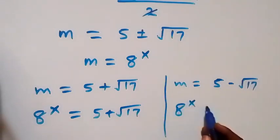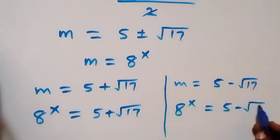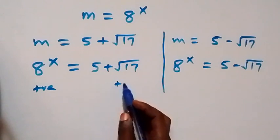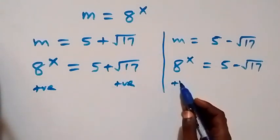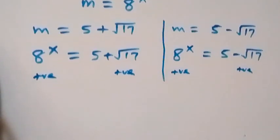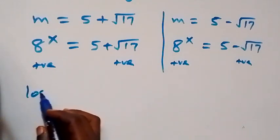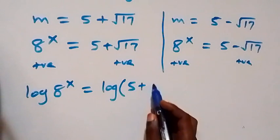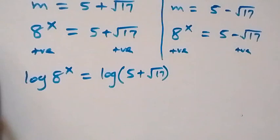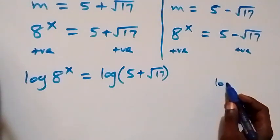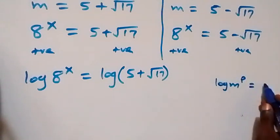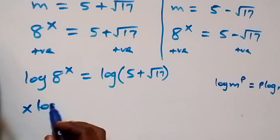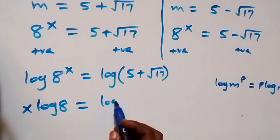This means 8 raised to power x equals 5 plus root 17, and also 8 raised to power x equals 5 minus root 17. Both values are positive, so both solutions are valid. Taking the log on both sides: log of 8 raised to power x equals log of bracket 5 plus root 17. Applying the power rule of logarithms — log m raised to power p equals p log m — we get x log 8 equals log of bracket 5 plus root 17.